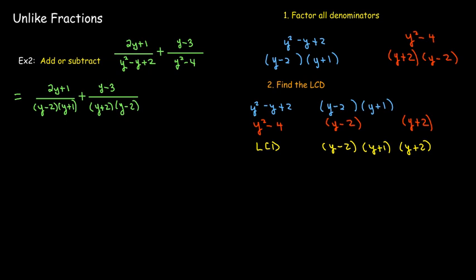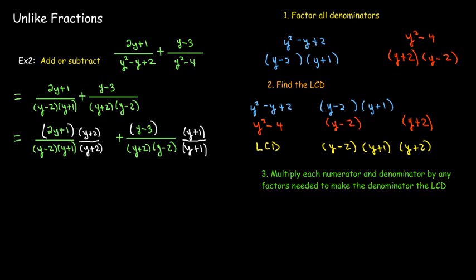So I write the y minus 2 under the current y minus 2. The y plus 2 doesn't appear anywhere above it, so it gets its own column. And then the LCD is just the product of all those three factors. And now I can look back in my addition at each denominator and see what's missing. Well, in the first denominator, I have a y minus 2 and a y plus 1. What's missing is the y plus 2. So that gets multiplied top and bottom in the first fraction. In the second fraction, I have a y plus 2 and a y minus 2. What's missing is the y plus 1. Then I remind myself that this division bar is a grouping symbol.